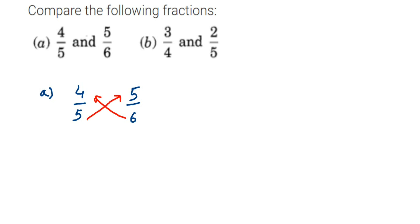So 6 into 4, 6 times 4 is 24, and 5 times 5 is 25. Now which one is greater? 25 is greater, right?